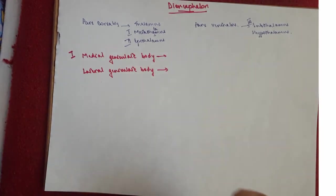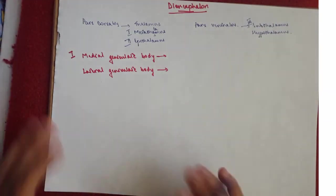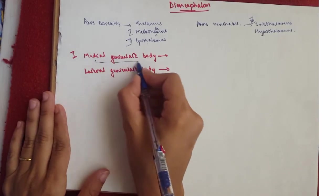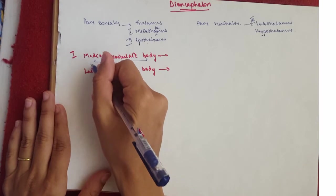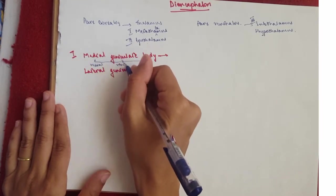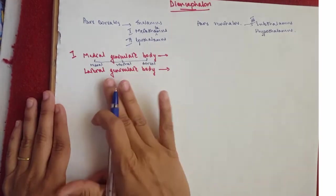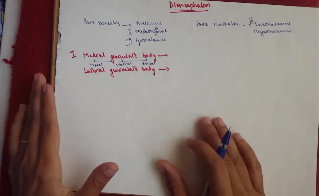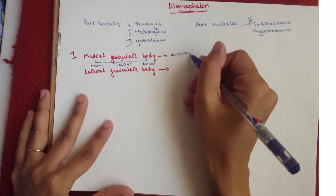These are bodies that contain nuclei. For example, the medial geniculate body consists of three nuclei: the medial, ventral, and dorsal nuclei. And this medial geniculate body is a relay station for the auditory pathway.